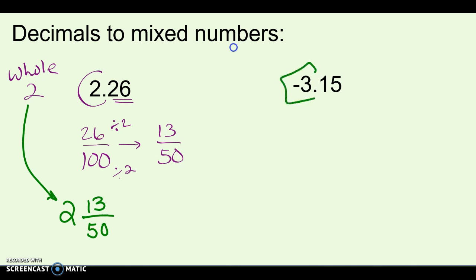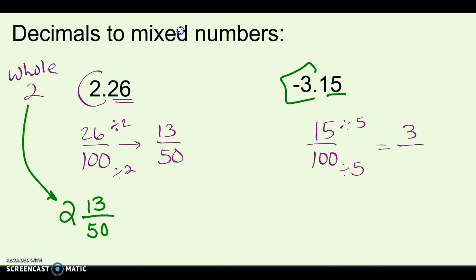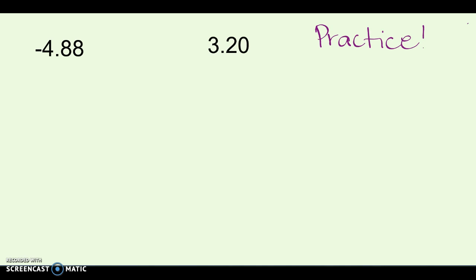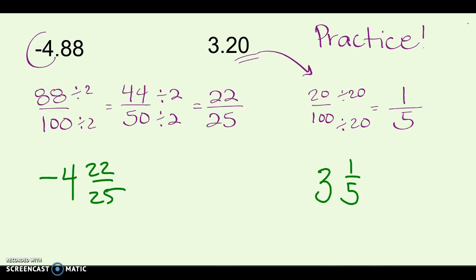For the next one, keep your whole number to the side. Change 0.15 into a fraction: 15 hundredths. Simplify by dividing by 5 — 15 divided by 5 and 100 divided by 5 — giving 3 twentieths. Put it together with the whole number negative 3 for the final answer. Practice: turn those decimals into mixed numbers. Answers: the first keeps the 4 and simplifies 0.88 into 22 twenty-fifths — final answer 4 and 22 twenty-fifths. The second keeps the 3; 20 hundredths simplifies to one fifth — so 3 and one fifth.